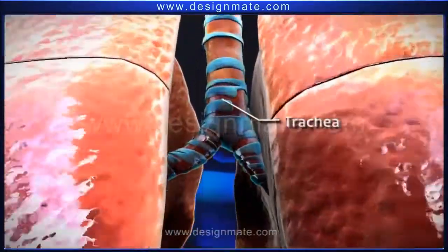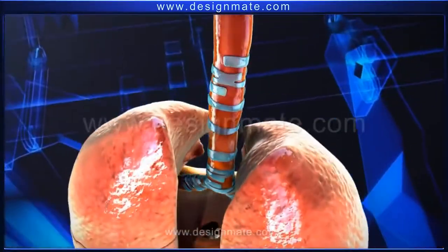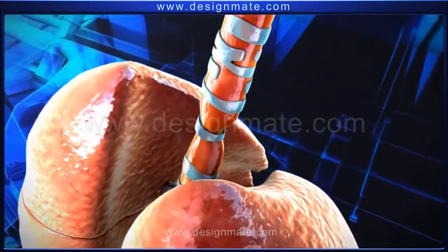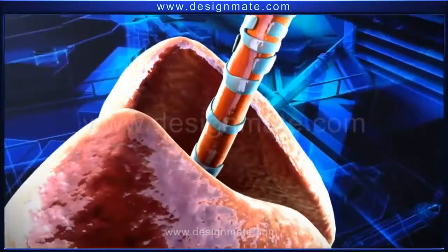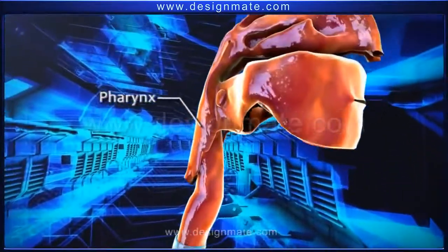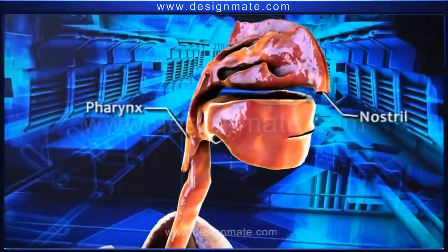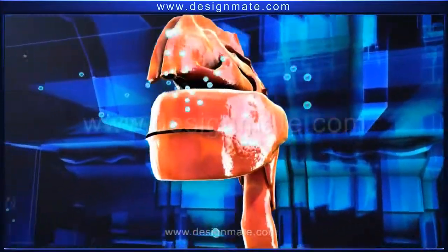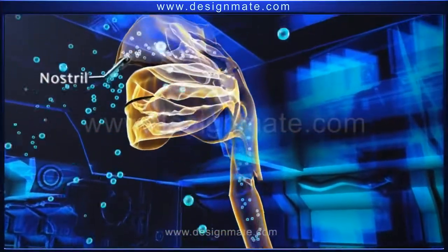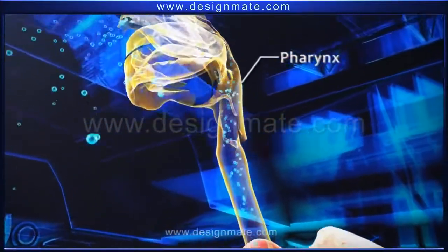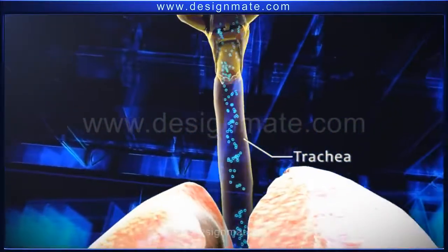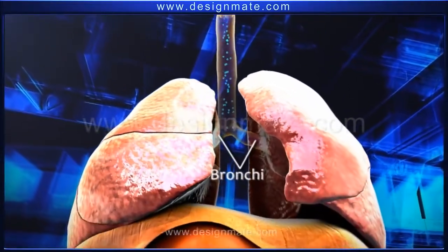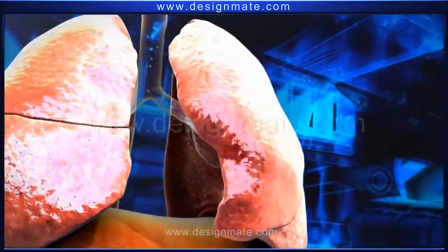Both lungs are associated externally with small tubular bronchi which unite and extend into the trachea. The trachea has incomplete C-shaped rings of cartilage which prevent the tracheal wall from collapsing. The trachea leads into the pharynx, which is connected to the nostrils.